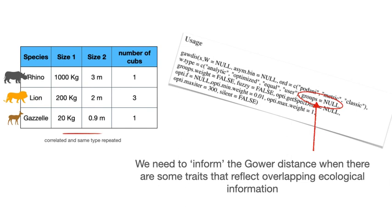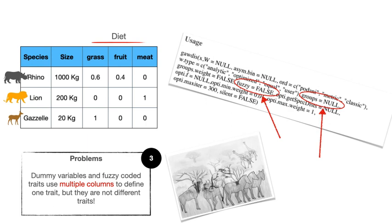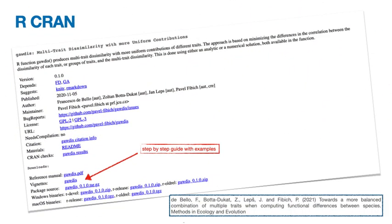A final potential problem is the use of dummy variables or fuzzy-coded traits. For these traits, we need to use multiple columns within a trait matrix. In an oversimplified example, diet is expressed as three columns, where each species can belong to one or multiple columns. In this case, if we use the Gower distance without care, the function will understand that each column is a different trait, which clearly is not the case. This issue can be solved simply in the new function Gaudis by using the argument 'groups' to specify which columns are in the same trait, and the argument 'fuzzy' to specify which groups are fuzzy-coded traits. All these issues are discussed with simple step-by-step explanations in the vignette provided together with the package on the CRAN page.